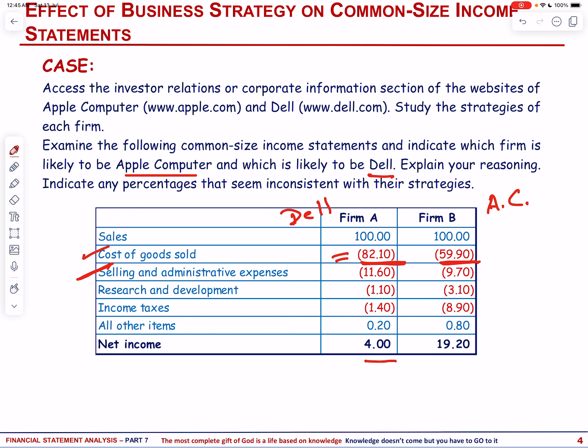Apple's products are positioned as premium and innovative, catering to a specific customer base that values design, functionality, and brand prestige. While Apple may spend significantly on marketing per unit or per dollar of revenue, its high profit margins allow it to maintain a lower overall selling and administrative expenses to sales percentage. Additionally, Apple benefits from strong brand loyalty and word-of-mouth marketing, which can reduce the need for excessive promotional activities compared to competitors.